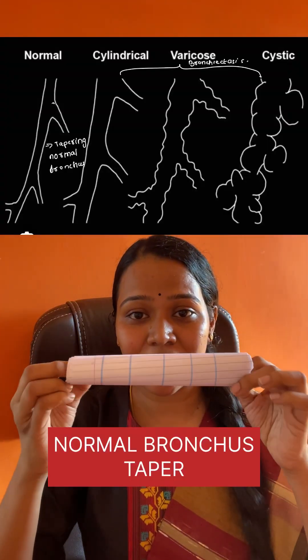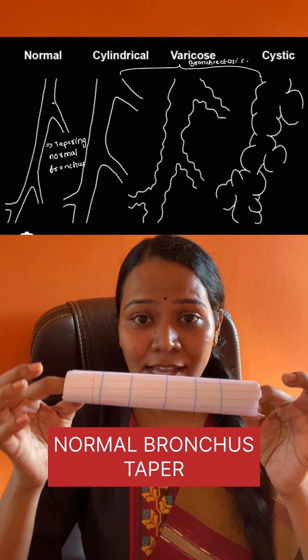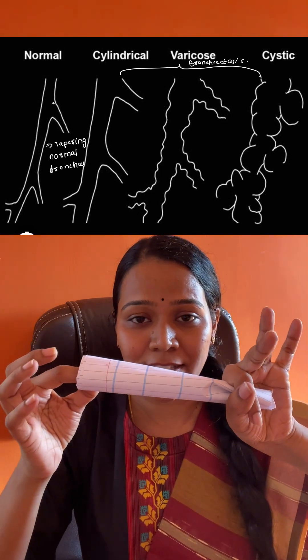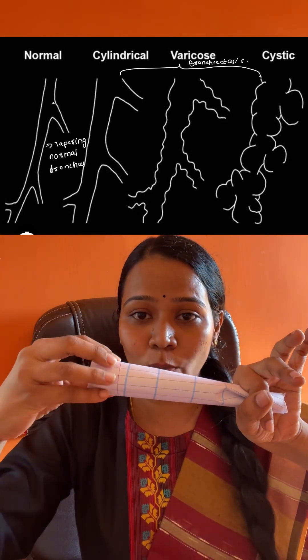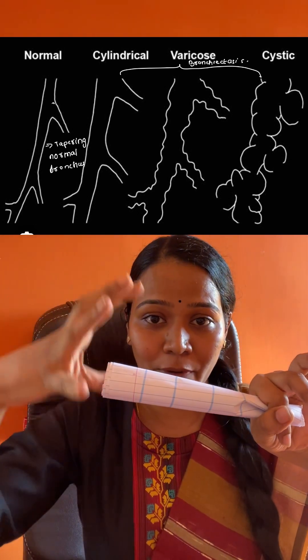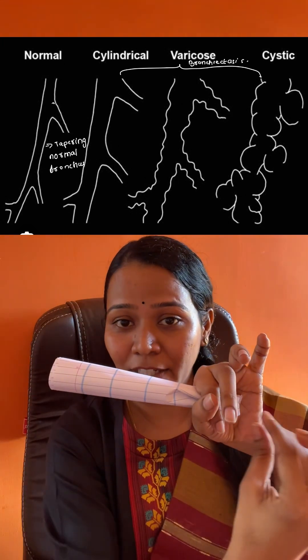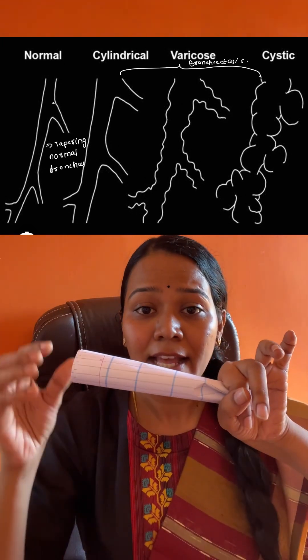First, remember if this is the normal bronchus, it will be tapering towards the end. Towards the hilum it will be large, and it will start tapering towards the end.